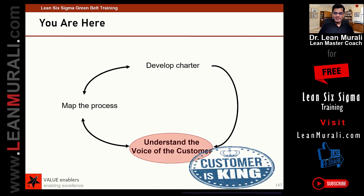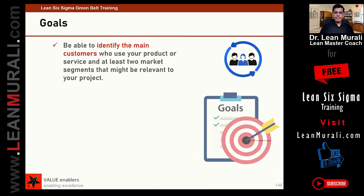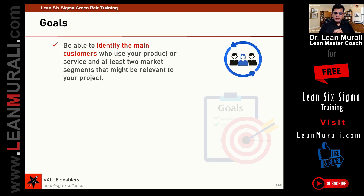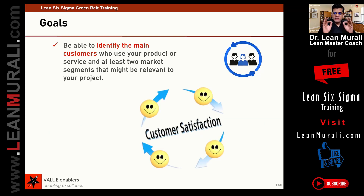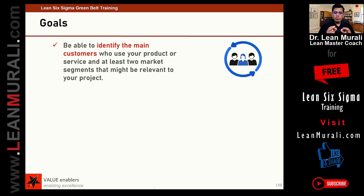Customer is a king. What are the goals? Be able to identify the main customer. The very important thing in problem solving is: any business needs growth, profit, and stability — and this growth, profit, and stability you will get only by customer satisfaction. And what does a customer want? The customer wants PQCD.